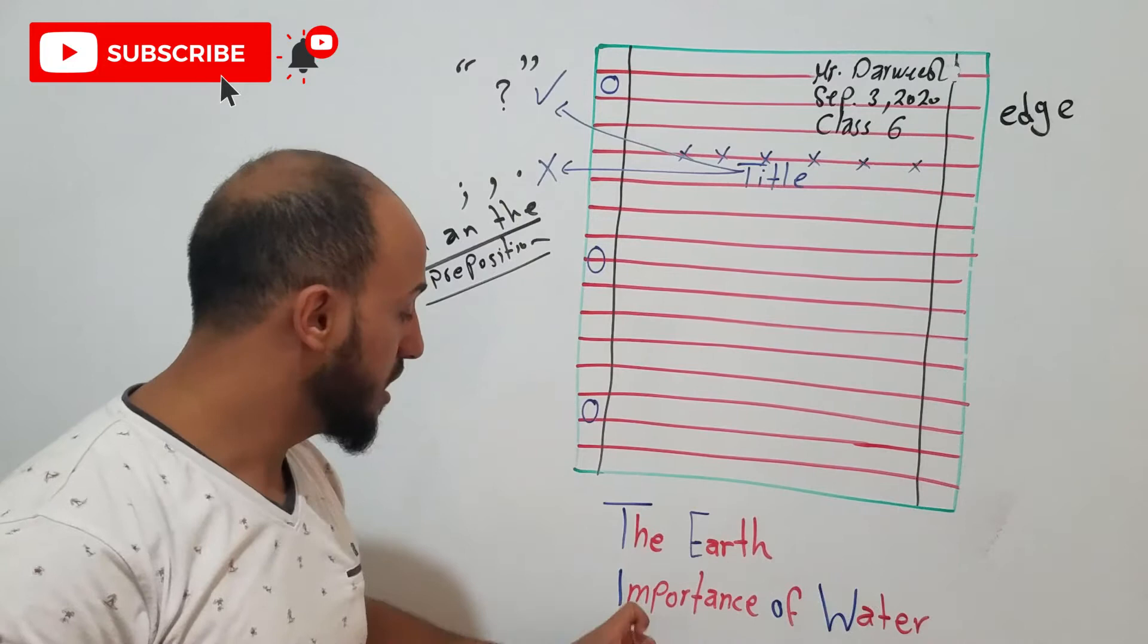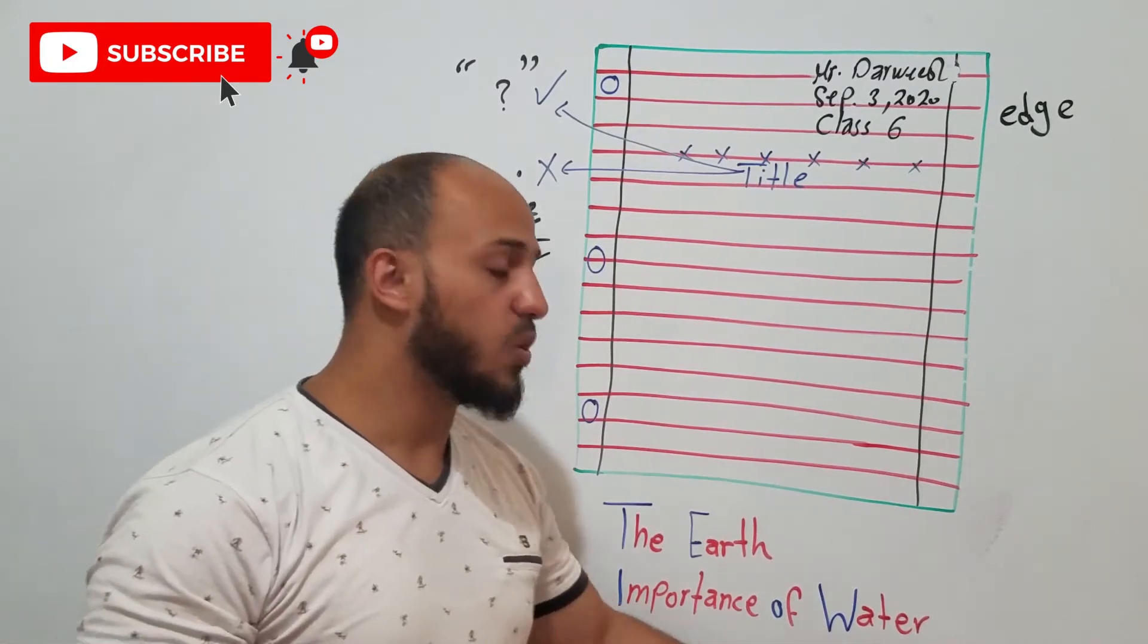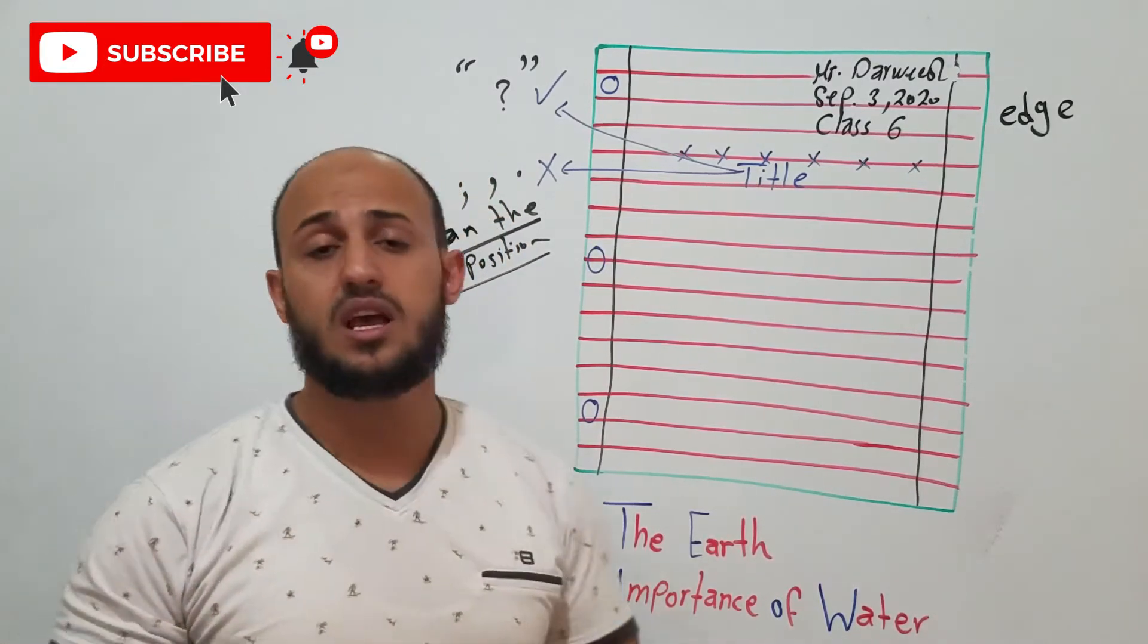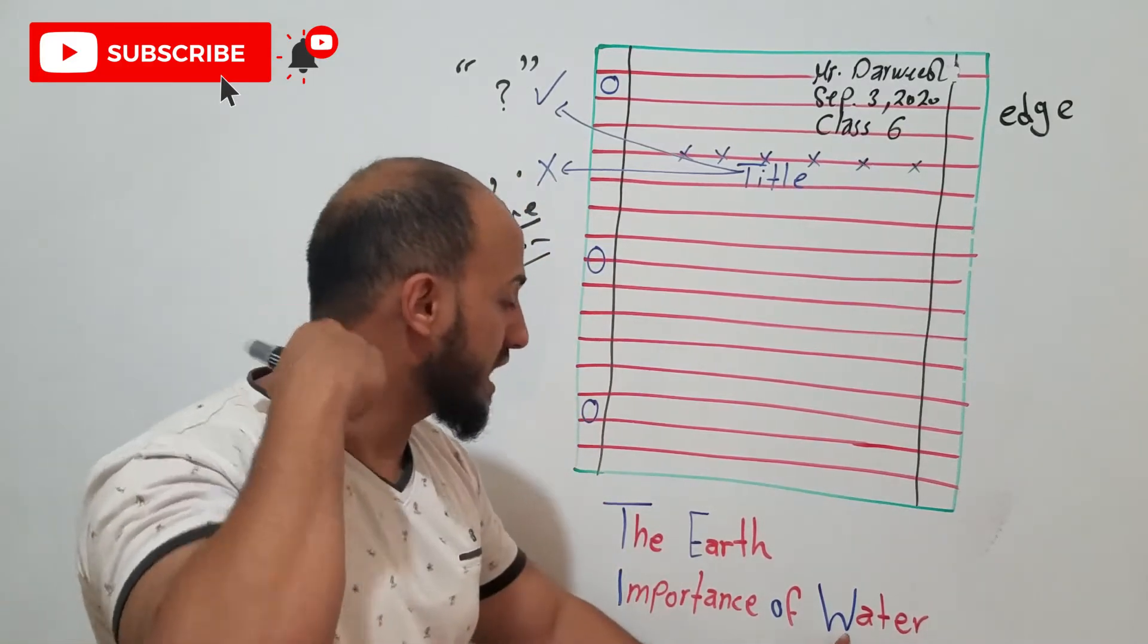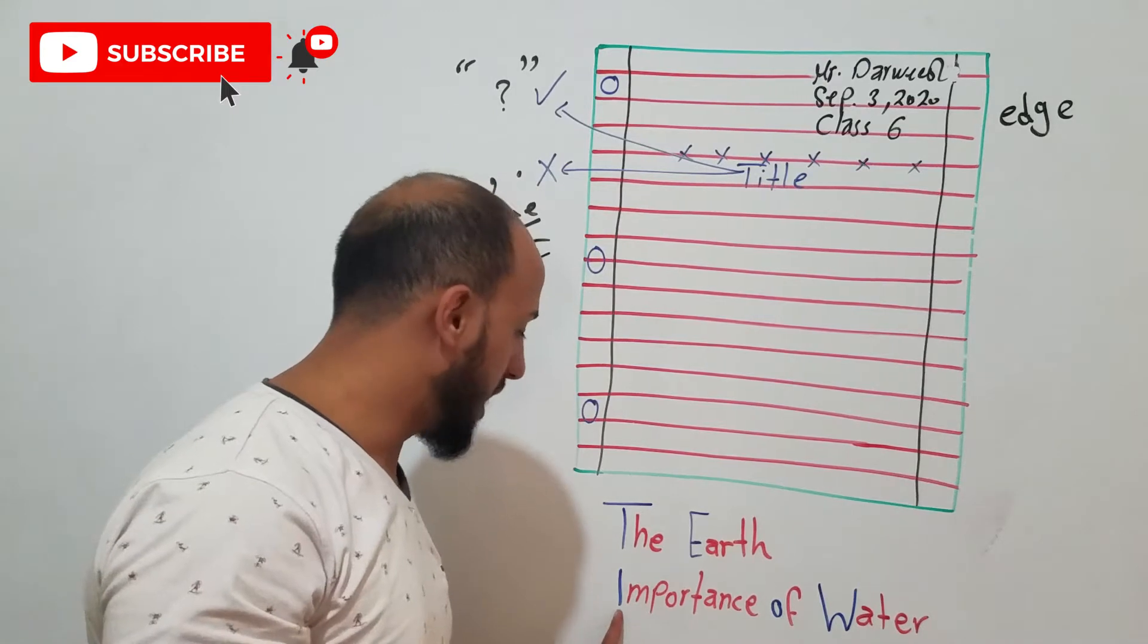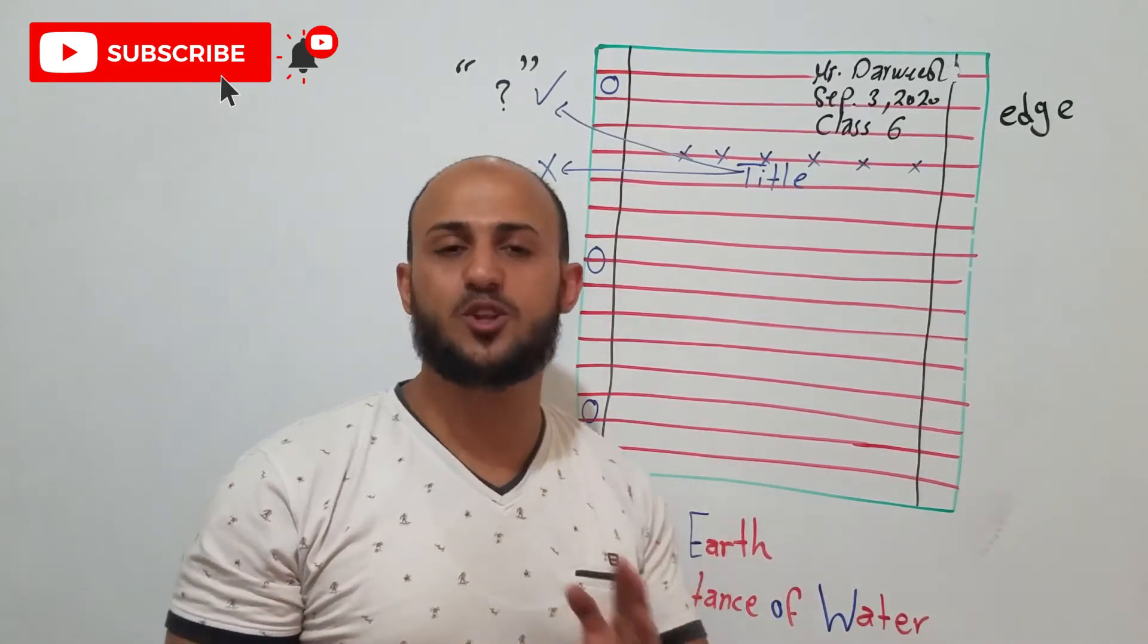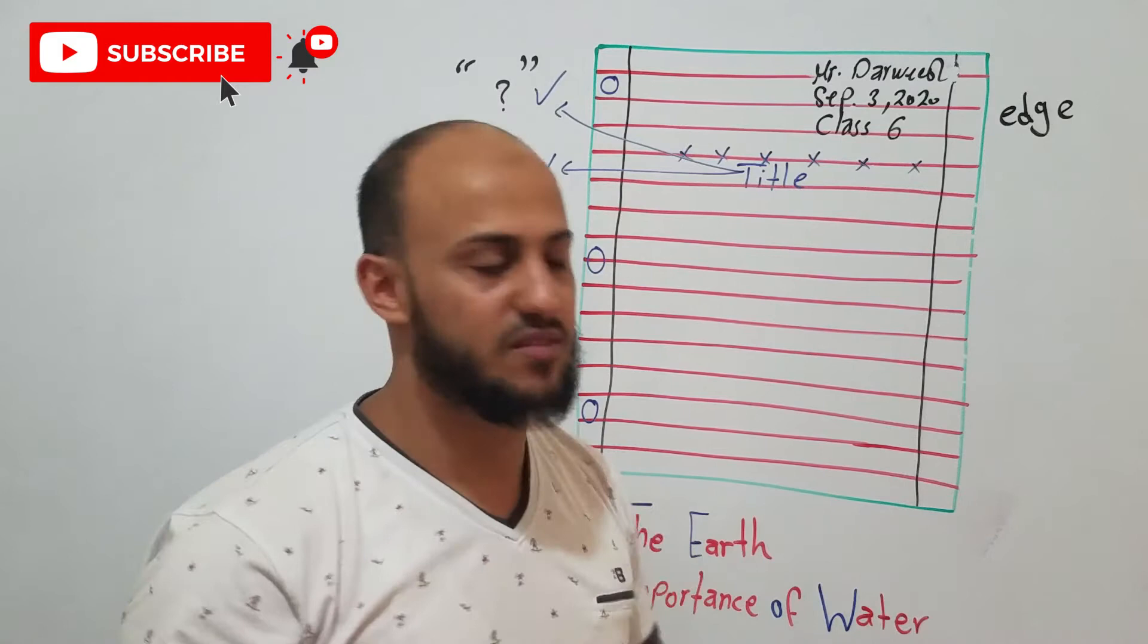Let's take another example. Importance of water. Water and important are important words. So, here, we capitalize it. We capitalize. But, here, it is in the middle. We don't capitalize it.